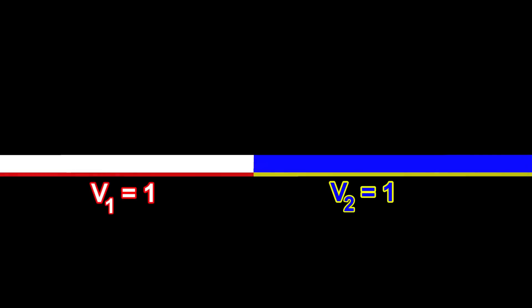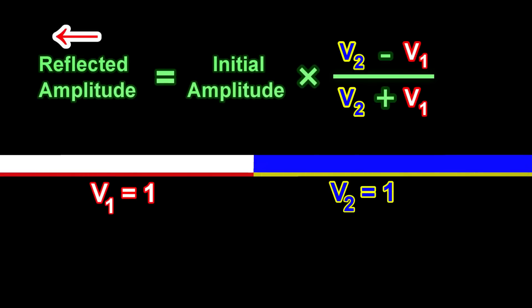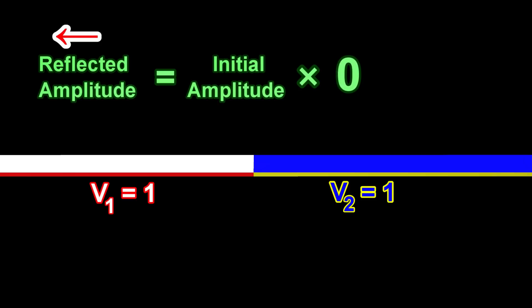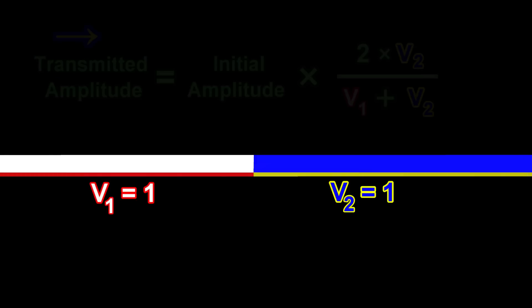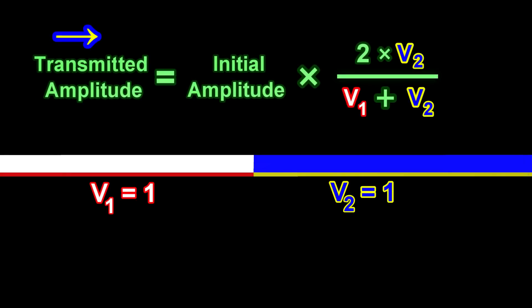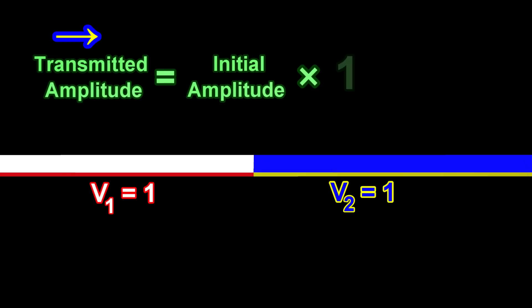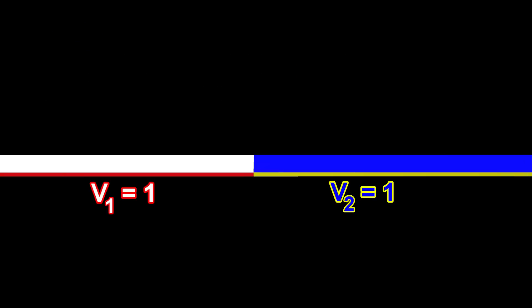Now, let us consider what happens when V1 is equal to V2. The reflected wave is zero, which means that there is no reflection. The transmitted wave is equal to the initial wave, which means that the wave just keeps moving unchanged.